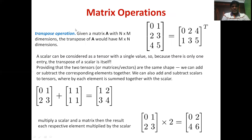The first operation is matrix transpose. Transpose is calculated as follows: given a matrix A with n by m dimension, the transpose A^T will have m by n dimension. Look at this matrix: 0, 1, 2, 3, 4, 5. The size of this matrix is three rows and two columns — that is three by two. When it is transposed, it becomes a two by three matrix with two rows and three columns.